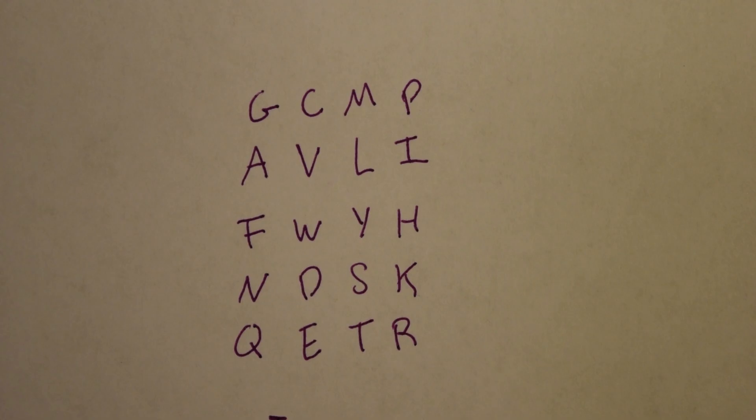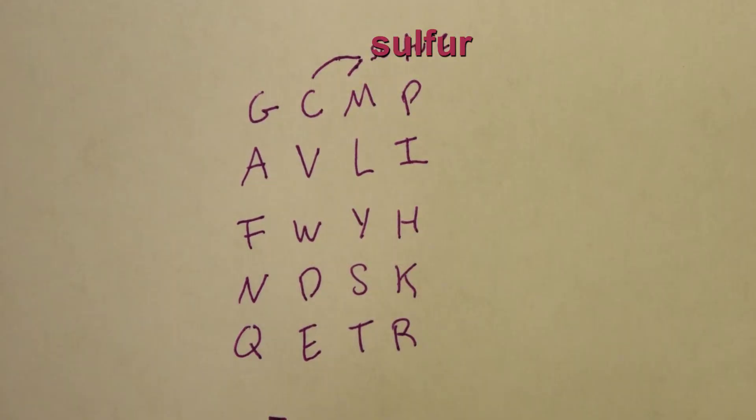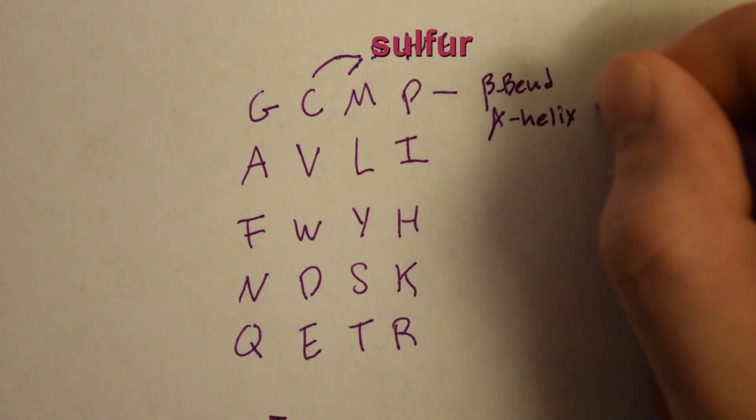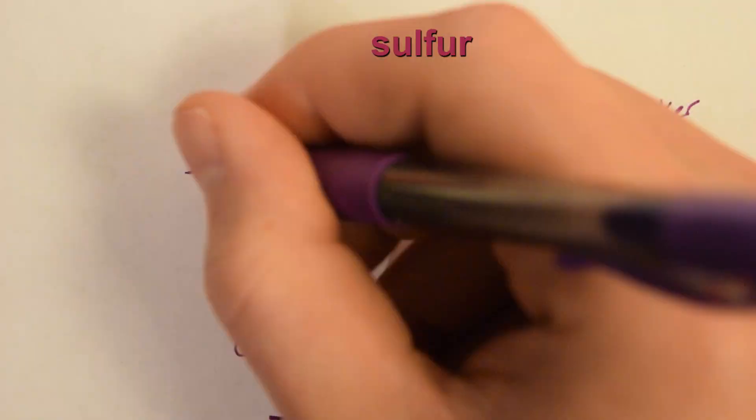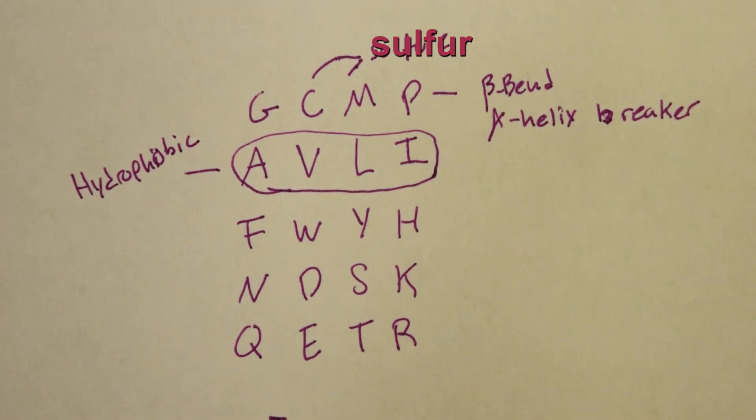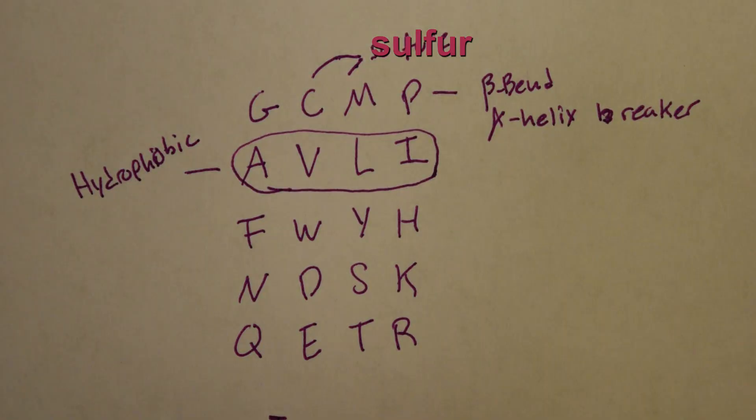The reason that I arranged them this way is because of how the amino acids are similar. So, cysteine and methionine both contain sulfur. Proline is the beta sheet bend or alpha helix breaker. AVLI are all hydrophobic amino acids that are similar in structure.